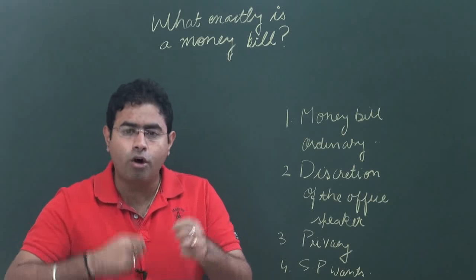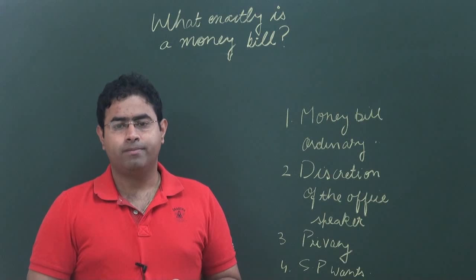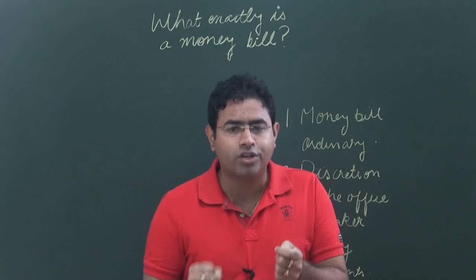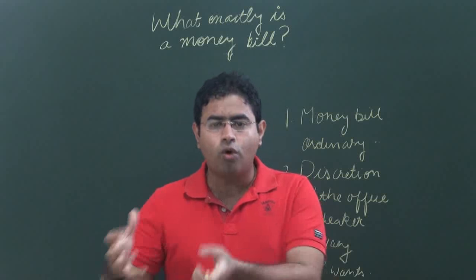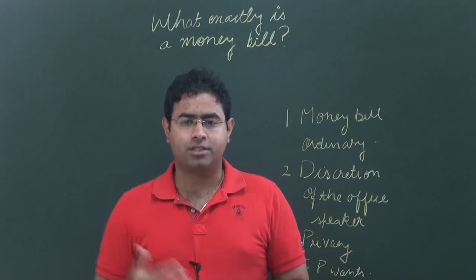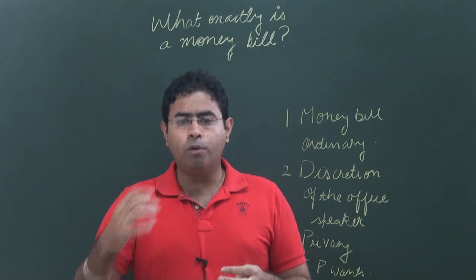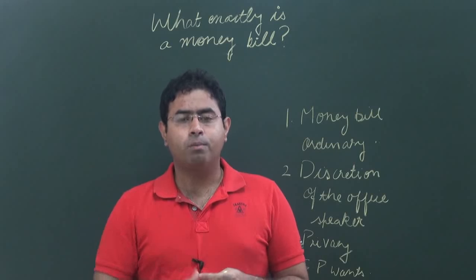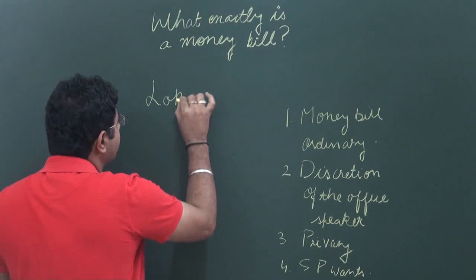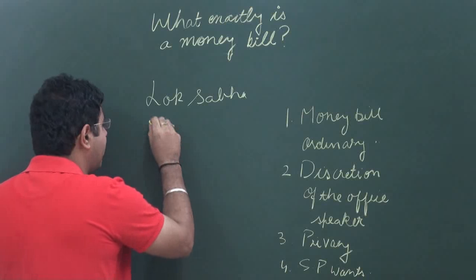For the formation of the government, it is the Lok Sabha elections that take place. Rajya Sabha is primarily meant to protect the rights of the states — it is the Sabha of the states. When it comes to financial matters, more power and authority has been conferred to Lok Sabha, while Rajya Sabha has got less power.